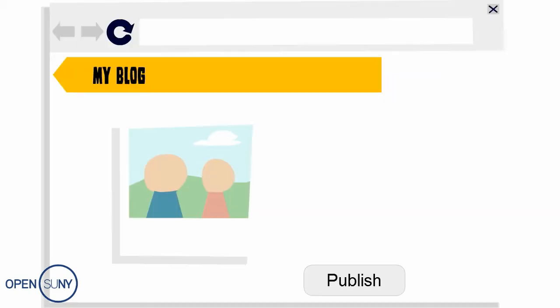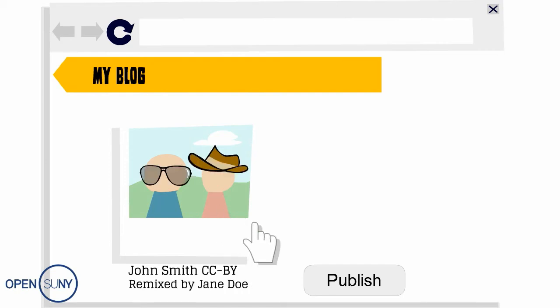I see. Then what you might be interested in is what's called a Creative Commons license. Users can apply Creative Commons licenses to their copyrighted works as a way of indicating to others what uses of their work are okay. Some Creative Commons licenses only require that you provide attribution to the original creator of the work, while others let users know if it's okay to make changes to the original work or not.